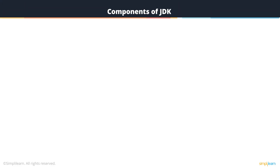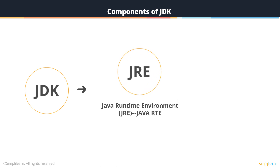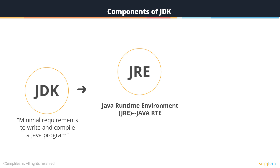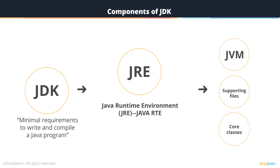Let us have a look at the components of JDK. Java Runtime Environment, JRE, primarily is a part of JDK, and it can also be termed as Java RTE. The JDK provides the minimal amount of requirements needed to write and compile a Java program. JRE consists of the JVM, supporting files, and the core classes.